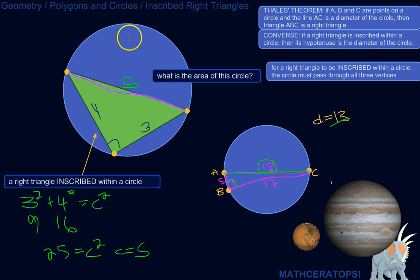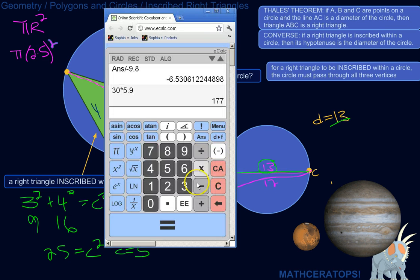The area of a circle is πr², r being the radius. The radius is half the diameter, so the area would be π times 2.5 squared. 2.5 squared times π is about 20 units.